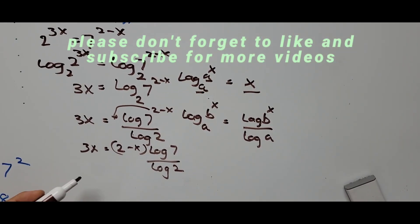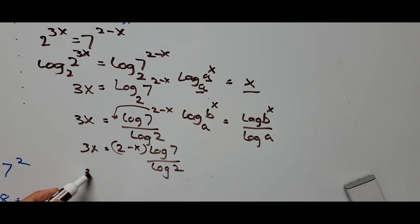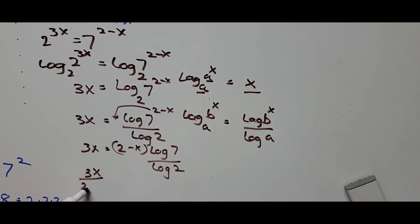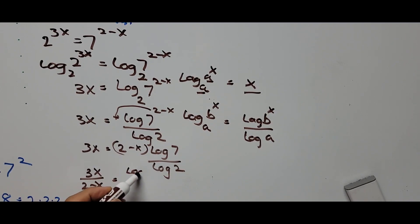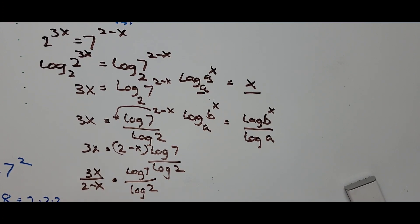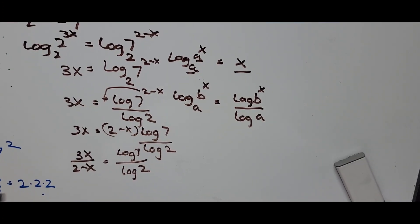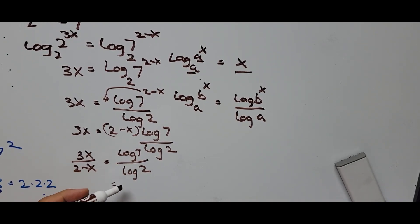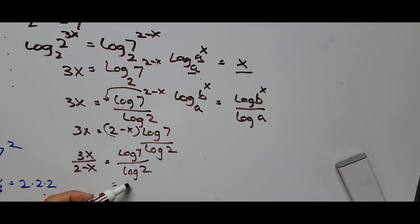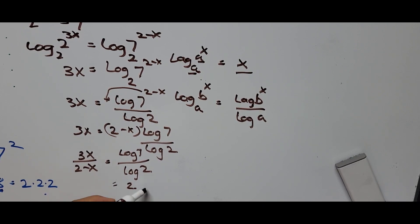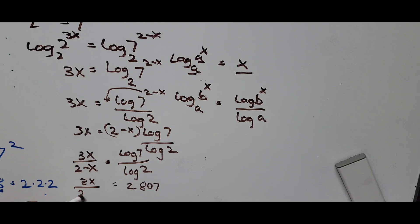Rearranging gives 3x divided by (2 minus x) equals log of 7 divided by log of 2. Using a calculator, log of 7 divided by log of 2 equals approximately 2.807 rounded to three decimal places. So 3x divided by (2 minus x) equals 2.807.